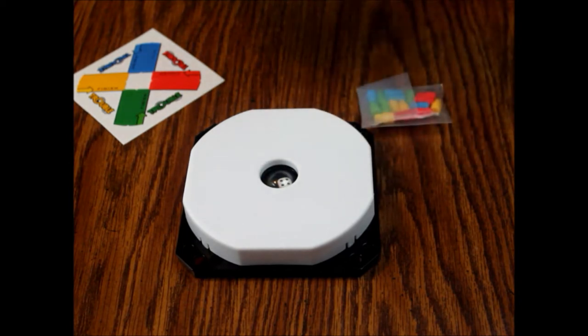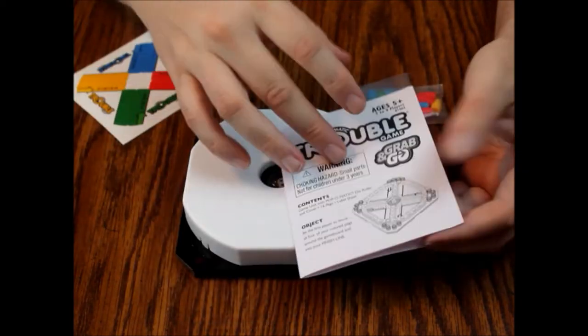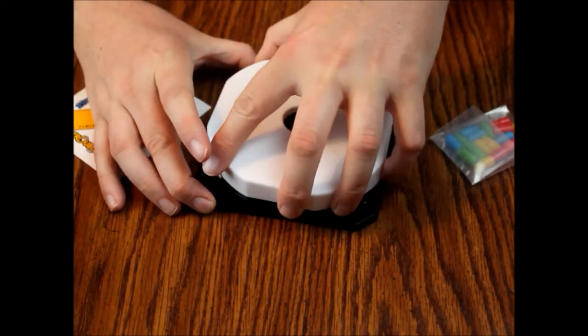Is this cardboard? Here's the instructions. Contents: game unit, die roller and cover, 16 pegs, label sheet. Object: be the first player to move all four of your colored pegs around the board into the finish line. It's got a little instruction sheet which is cool.